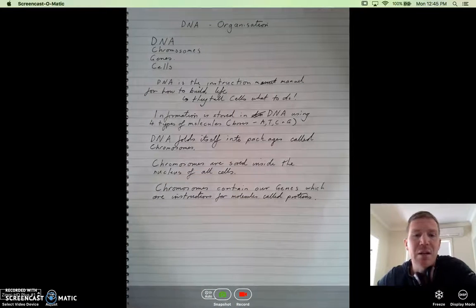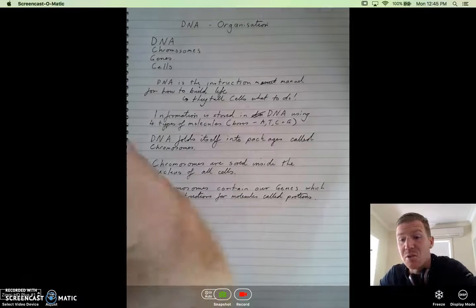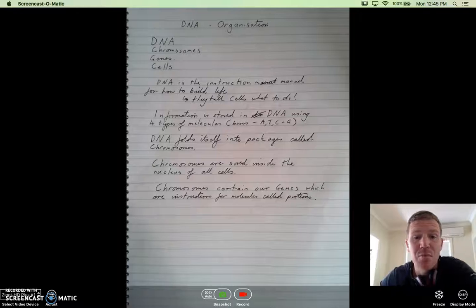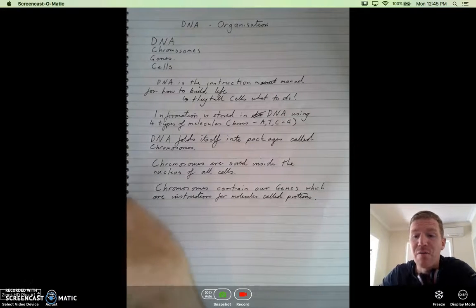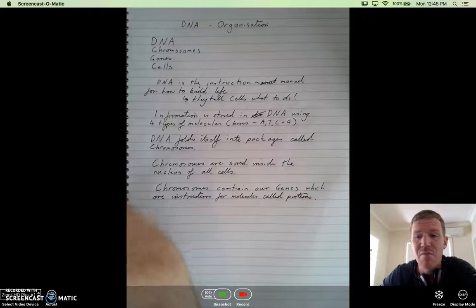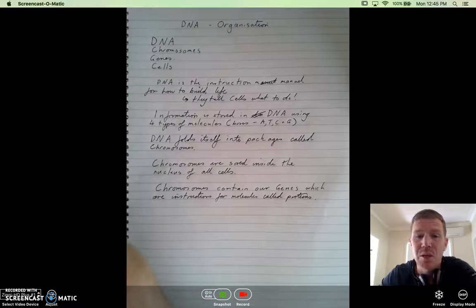DNA folds itself into packages called chromosomes, and it's a term you've probably heard from before. And those chromosomes are stored inside the nucleus of every cell in a living organism. So every single cell in your body has a full set of chromosomes.